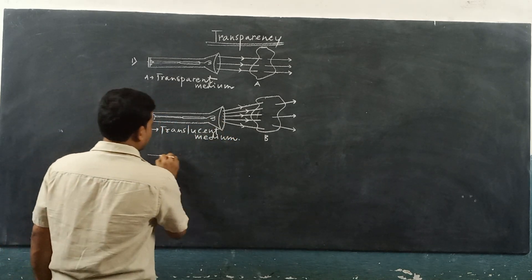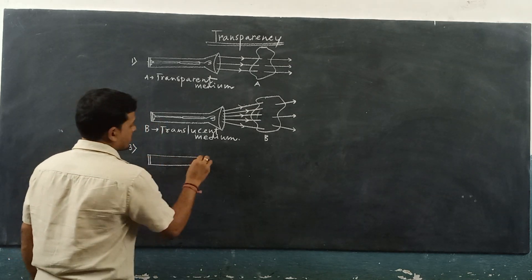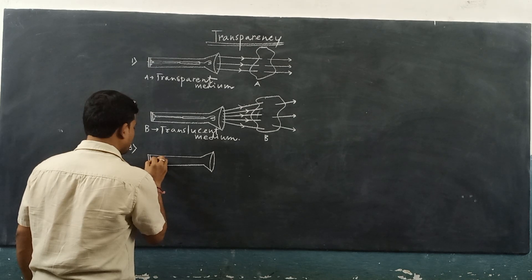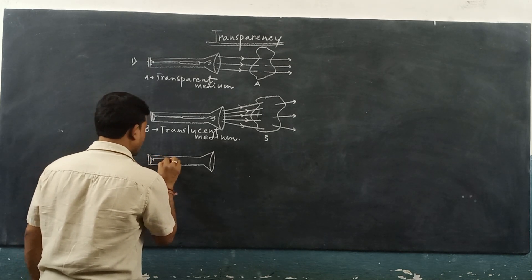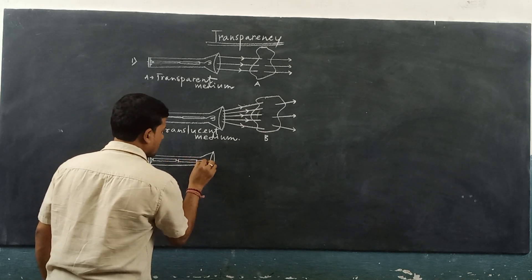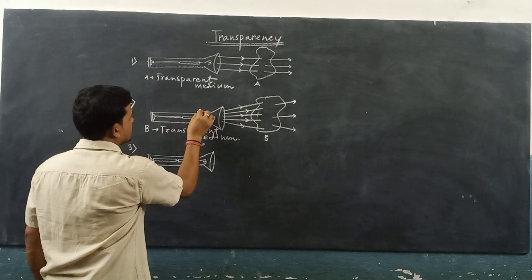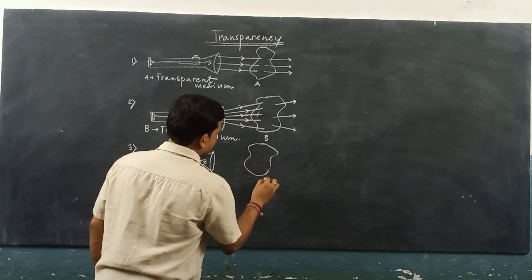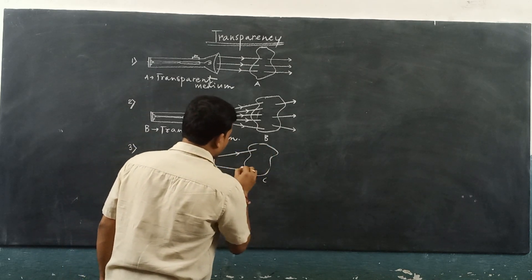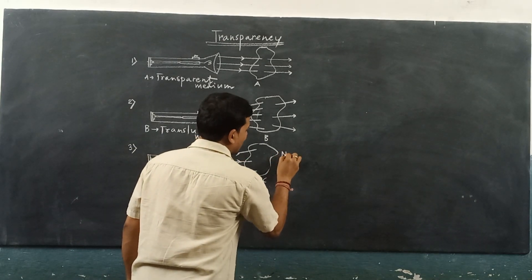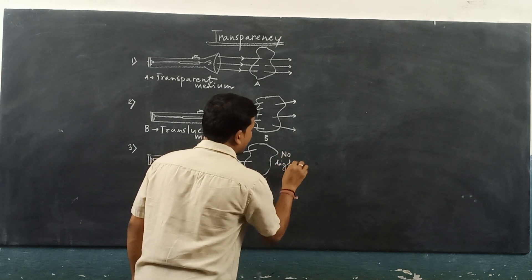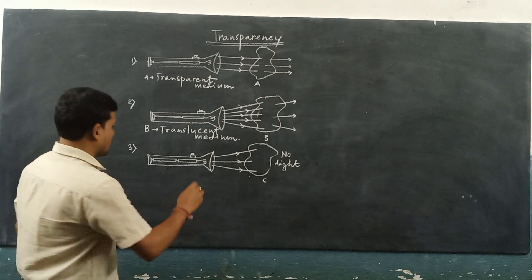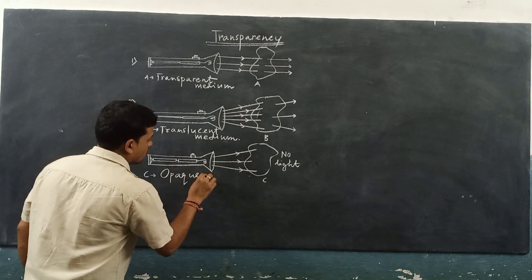Similarly, another material C is placed, with the torch light taken as the source of light. Object C is here — light rays coming from the torch fall on C, but here no light is obtained beyond C. That means all the light energy falling on C cannot pass through it at all. So, C is considered to be an opaque body — an opaque medium.